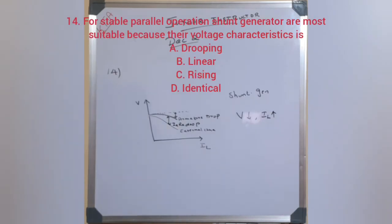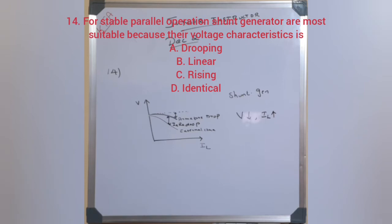For stable parallel operation, shunt generators are most suitable because their voltage characteristic is dropping. The options were: dropping, linear, rising, or identical. The shunt generator has a stable dropping characteristic which makes it suitable for parallel operation.